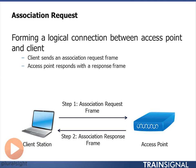The access point will then come back with an association response frame, which includes what's called an association ID. From this point on, the client station has a unique association ID and will use that association ID in various exchanges going forward between the client station and the access point.